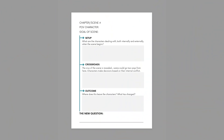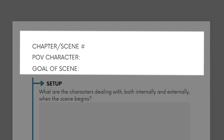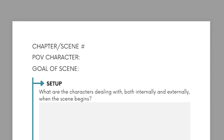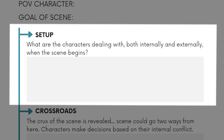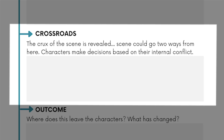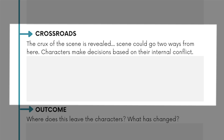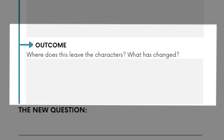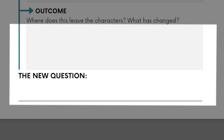At the top we're going to fill out some basic info for the scene or chapter: number, point of view character, and then in preferably one line, describe the goal of this scene. Then we have our three beats — setup, crossroads, and outcome. For the setup, ask yourself: what are the characters dealing with, both internally and externally, when the scene begins? This is going to be what sets the stage for the main conflict to play out. At the crossroads, this is where the crux of the scene is revealed — the scene could go two ways from here, and characters make decisions based on their internal conflict. Then at the outcome, ask yourself: where does this leave the characters? What has changed? That's the most important question to ask yourself at the end of every chapter. And that leads us to the cliffhanger — or the new question, as I like to call it.